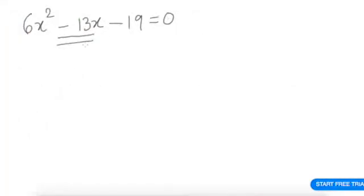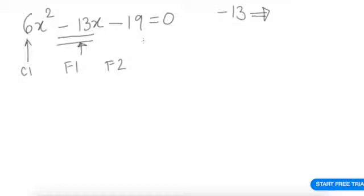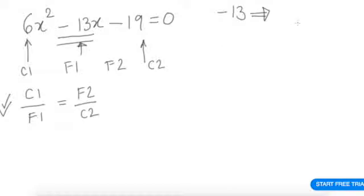Now by Vedic mathematics, let us find the factors of the next expression. We need to split −13 into two parts such that c1 divided by f1 equals f2 divided by the constant term.